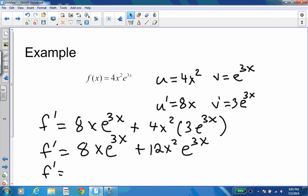We can factor out a four x and we can factor out an e to the three x, which would leave us with two.